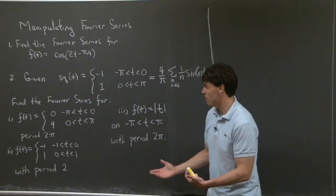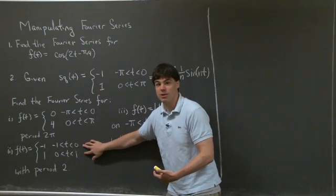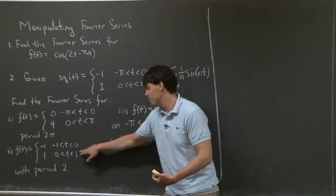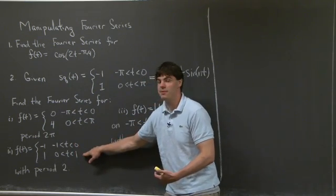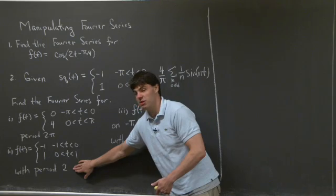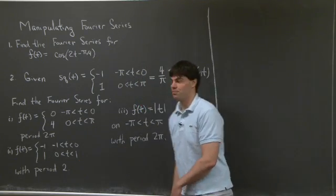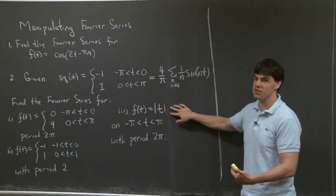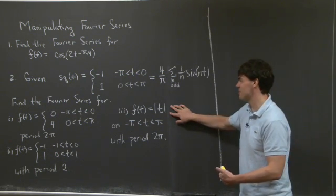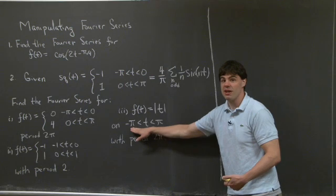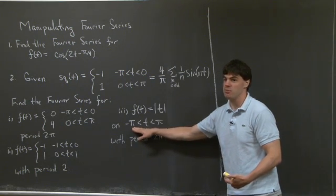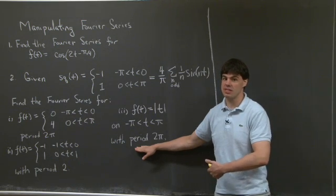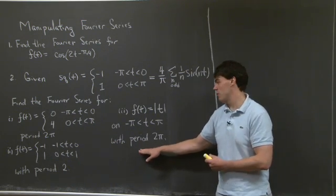The second problem is to find the Fourier series of a function which is minus 1 from minus 1 to 0, and 1 from 0 to 1. So this is the square wave function, but now has period 2. And then lastly, we're asked to find the Fourier series of a function f of t which is the absolute value of t, defined on the interval from minus pi to pi, and extended on the entire domain with period 2 pi.